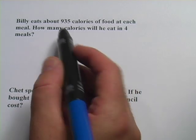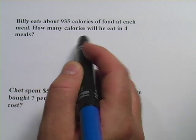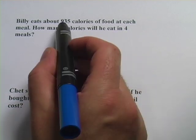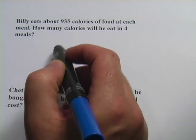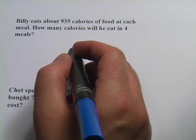This one says, Billy eats about 935 calories of food at each meal. How many calories will he eat in four meals? So we have four meals, they each have 935 calories in them, so those are your equal groups. The question is how many total calories does he eat in those four meals?